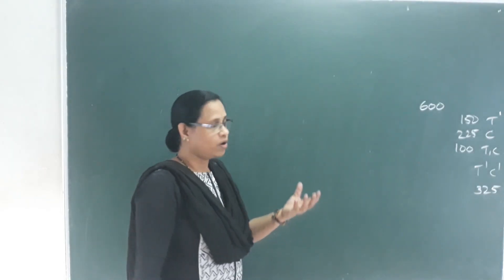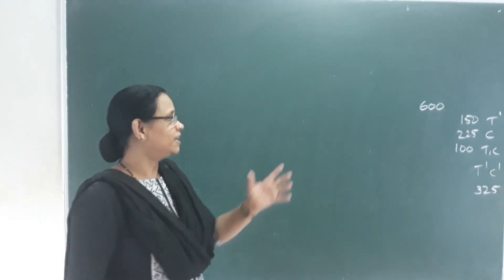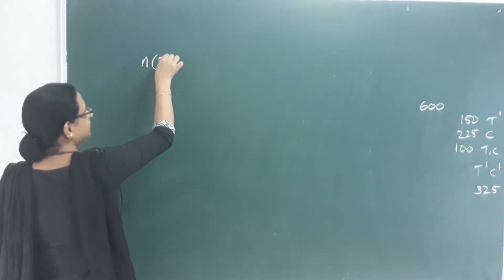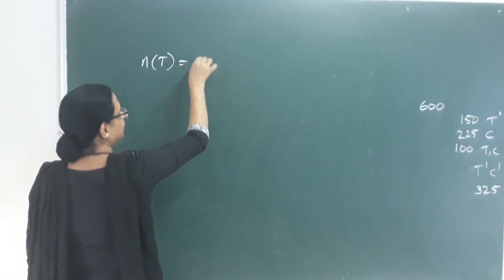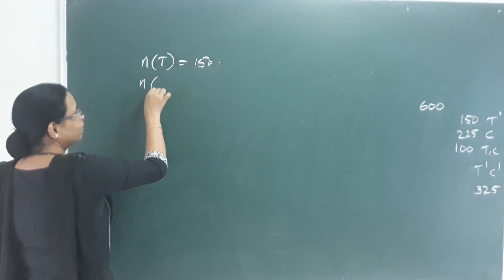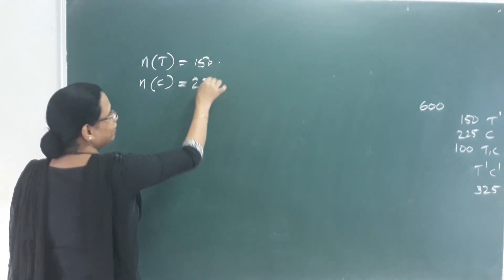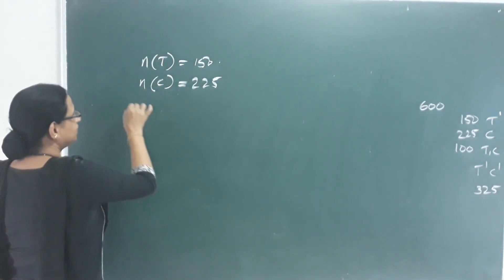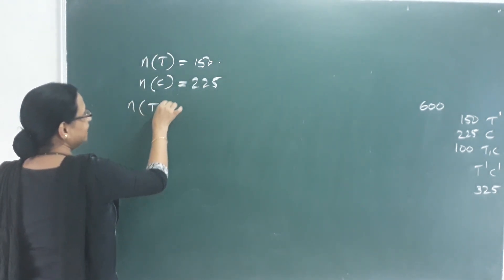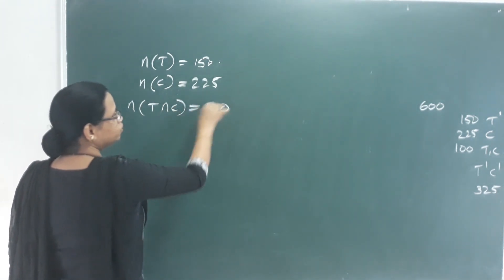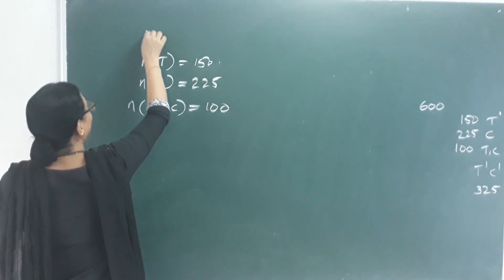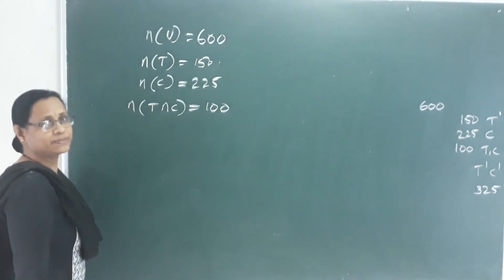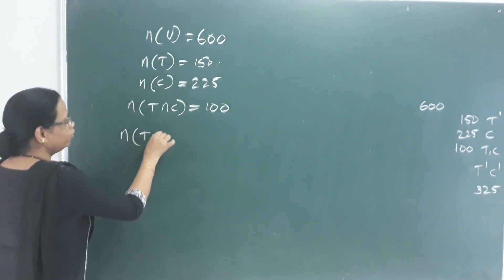In this survey, the number of students taking tea is 150, and the number taking coffee is 225. The number of students taking both tea and coffee — that is, T intersection C — is 100. The total number in the universal set is 600.